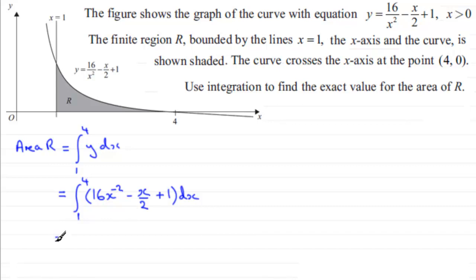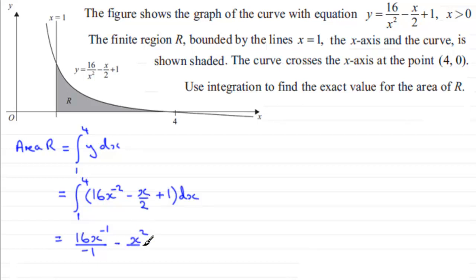In the usual way when integrating, just add 1 to the power and divide by the new power. So if we add 1 to the power of minus 2 you get x to the power minus 1, then divide by minus 1. For the next term, thought of as minus a half x: add 1 to the power to get x squared, divide by 2 — so you end up with minus x squared over 4. Then the integral of the constant 1 is simply x. Put it all in square brackets between the limits 1 and 4.